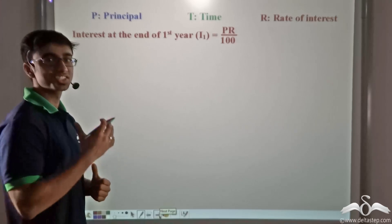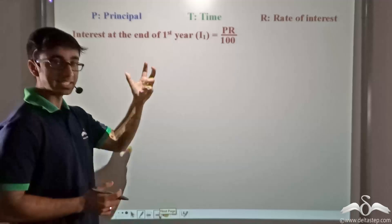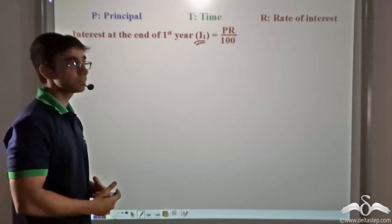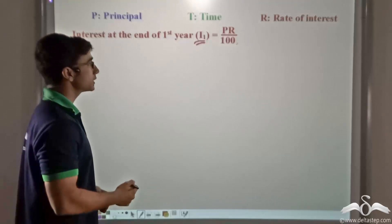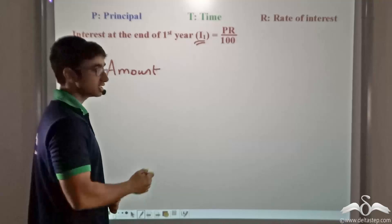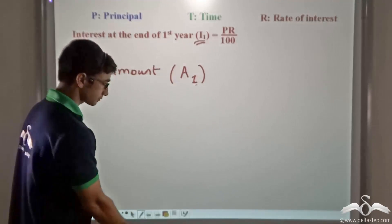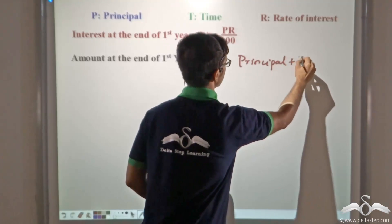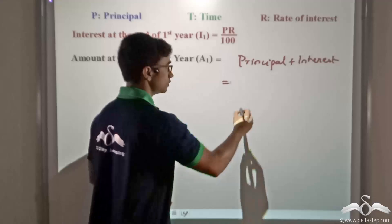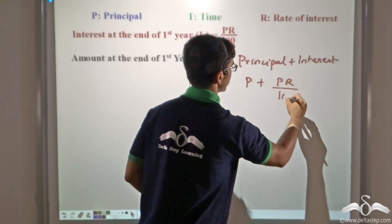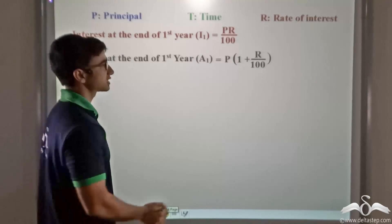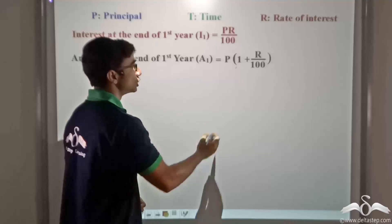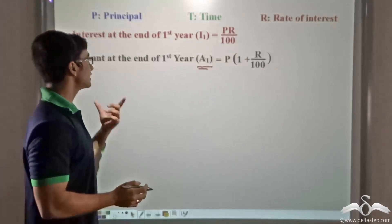We consider a general scenario where the principal is P, the time is T, and the rate of interest is R. By applying the formula for simple interest, we find that I1, the interest for the first year, equals PR by 100. The amount at the end of the first year, A1, equals principal plus interest: P plus PR divided by 100. Taking P common, we get A1 equals P into 1 plus R by 100.